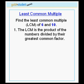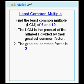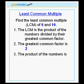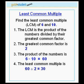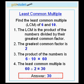Remember, the LCM is the product of the numbers divided by their greatest common factor. The greatest common factor of 6 and 10 is 2. The product of 6 and 10 is 60. We therefore calculate the least common multiple by dividing 60 by 2, which equals 30.